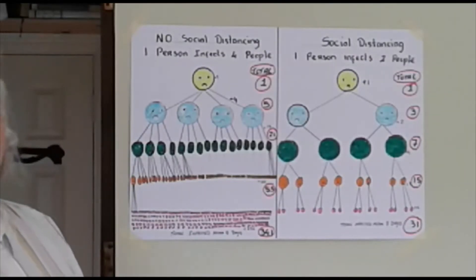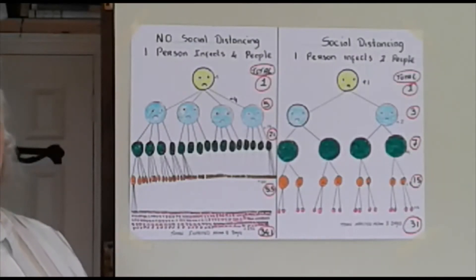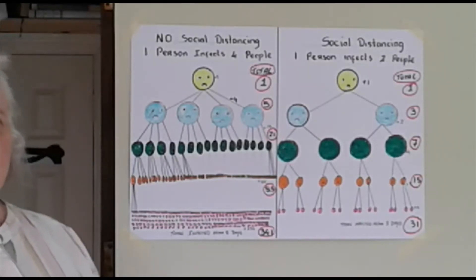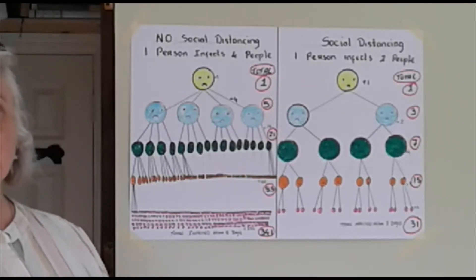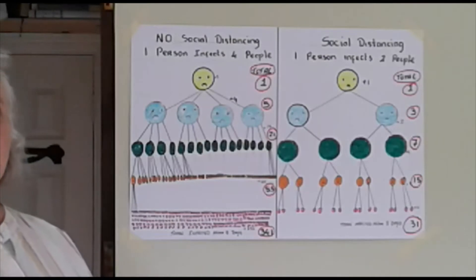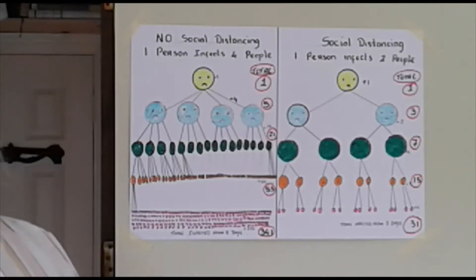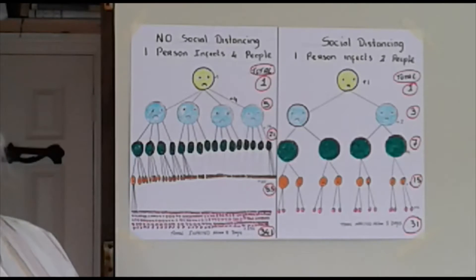Hello everyone. Today I'm going to talk to you about social distancing and why it's so important to stop the spread of the virus — and that's what flattening the curve means. It's to stop the virus spreading too fast so the hospitals will be able to cope.